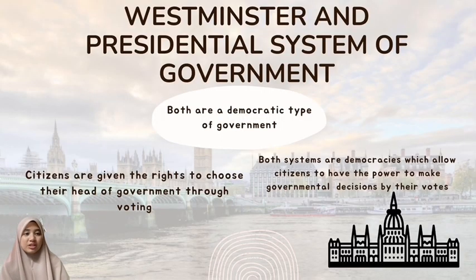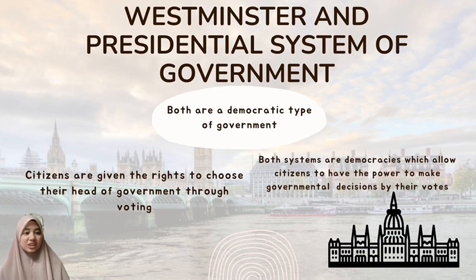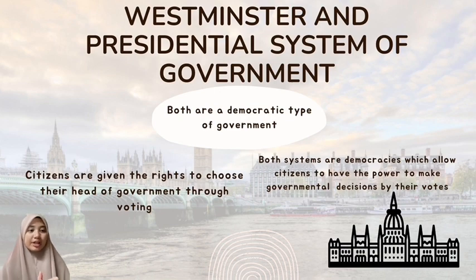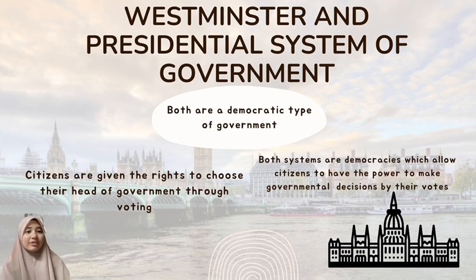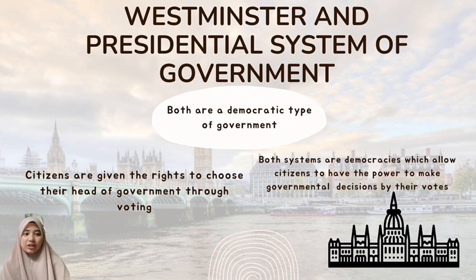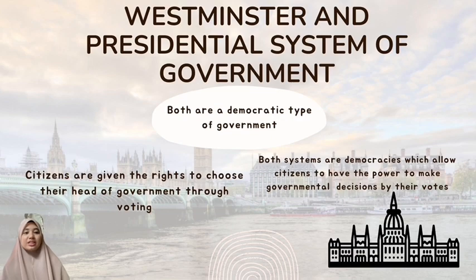A second similarity between the Westminster system and the presidential system is that both are a democratic type of government, meaning both systems are democracies that allow citizens to have the power to make governmental decisions through their votes. Both systems allow citizens to choose and cast votes for the head of the executive. For example, in Malaysia, Article 119 of the Federal Constitution states the qualifications of voters, giving rights to citizens above 18 years old to vote in general elections. Similarly, the 14th Amendment, Section 1 of the United States Constitution states that one needs to be a person born or naturalized in the United States to be eligible to vote.